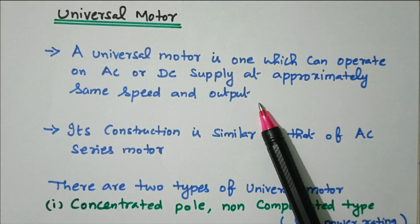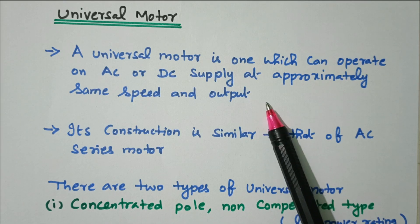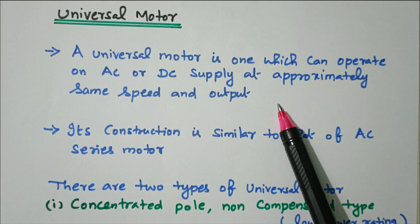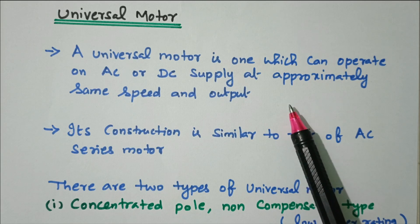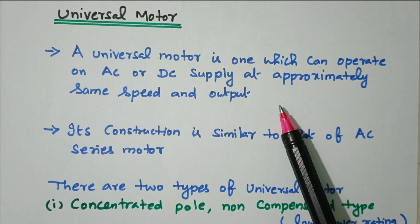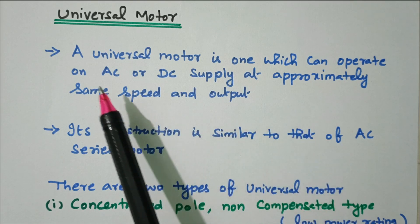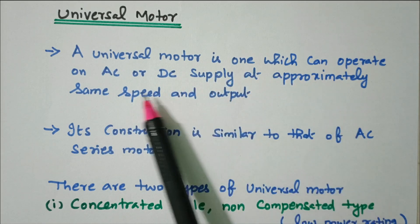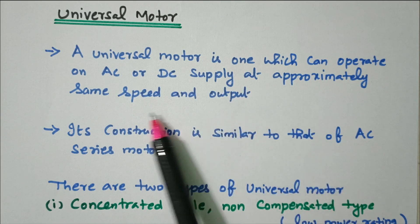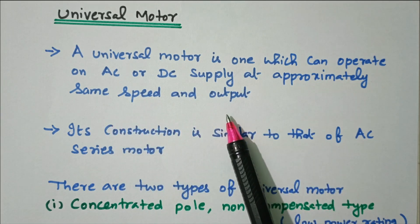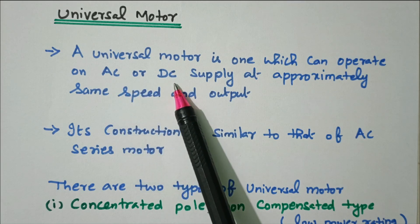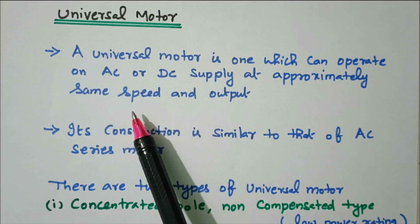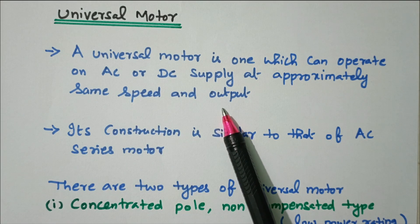It mostly has only two poles, so the speed is very high. For applications where we need high speed, you can use this universal motor — normally the sewing machine, vacuum cleaner, food and drink mixer. A universal motor is one which can operate on AC or DC supply at approximately the same speed and output.